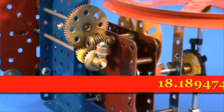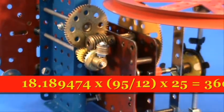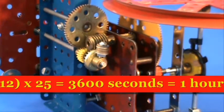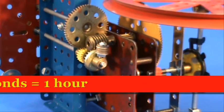18.189474 seconds, reduced by 95 to 12, then by 25 to 1 here, gives us 3,600 seconds, the number of seconds in one hour.